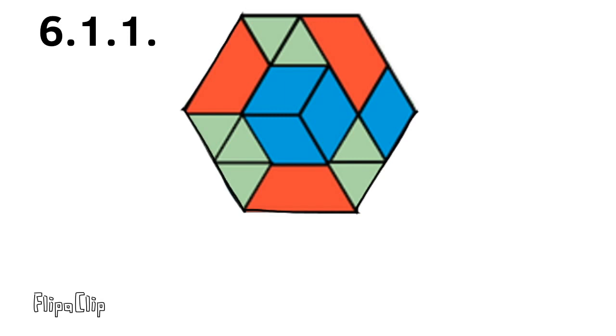I notice that each blue rhombus is the same size as two green triangles. I also notice that each red trapezoid is the same size as three green triangles.